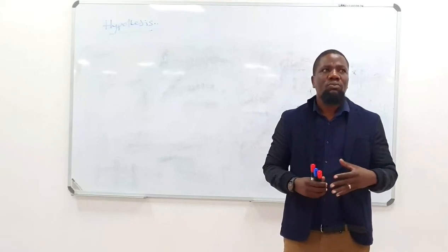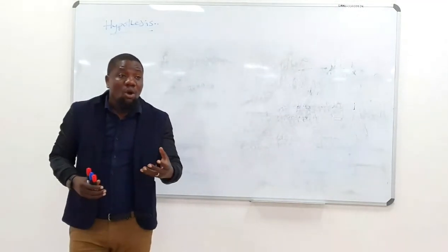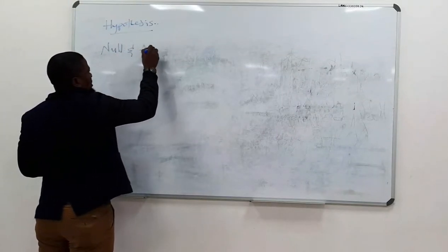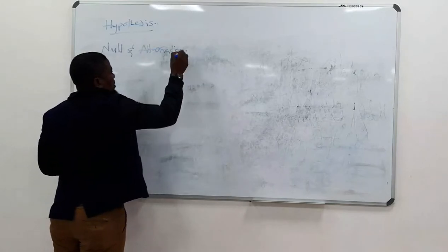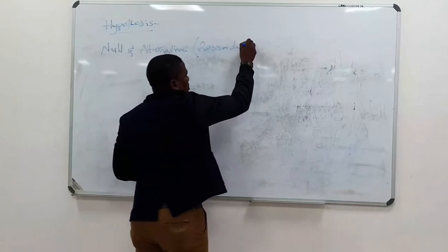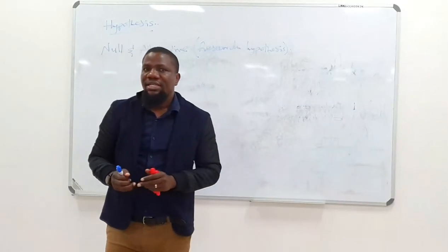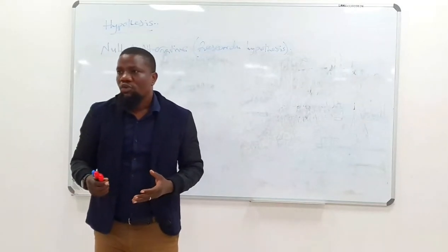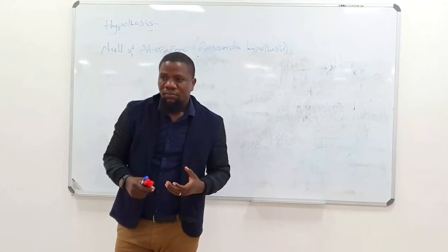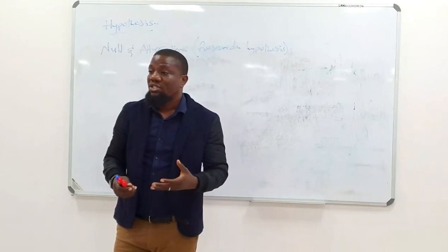Hypothesis can come in two forms: what we call the null hypothesis and the alternative hypothesis, which is also referred to as the research hypothesis. I want to be clear that research is hypothesis-driven. For you to go and carry out research, you want to build evidence to test a certain hypothesis. That's why research is hypothesis-driven.